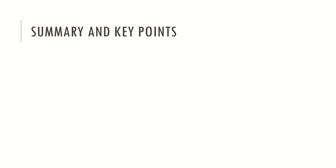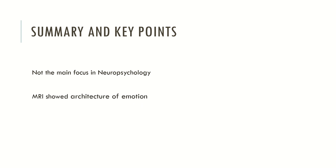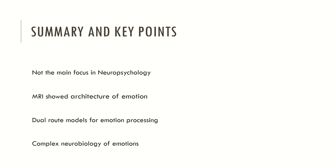Now let's see the summary and key points. Typically emotion is not the main focus in neuropsychology because neuropsychology tends to rely more on neurocognitive processing. MRIs show that there is a neural architecture of emotion, and this neuroarchitecture can help us understand how emotions are activated. Emotional processing may be activated by two different routes: one fast route associated with bottom-up appraisals, and one slow route associated with top-down processing. There are several brain systems related with emotions, which implies that the neurobiology of emotions is a very complex field in neuropsychology and neuroscience.